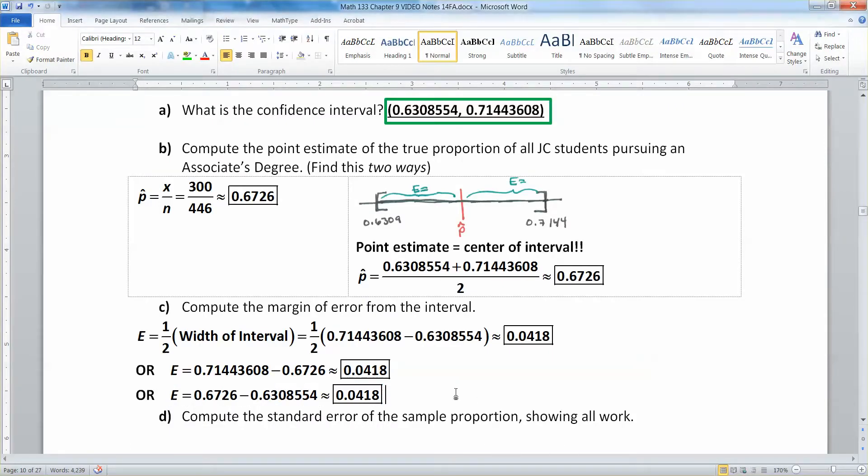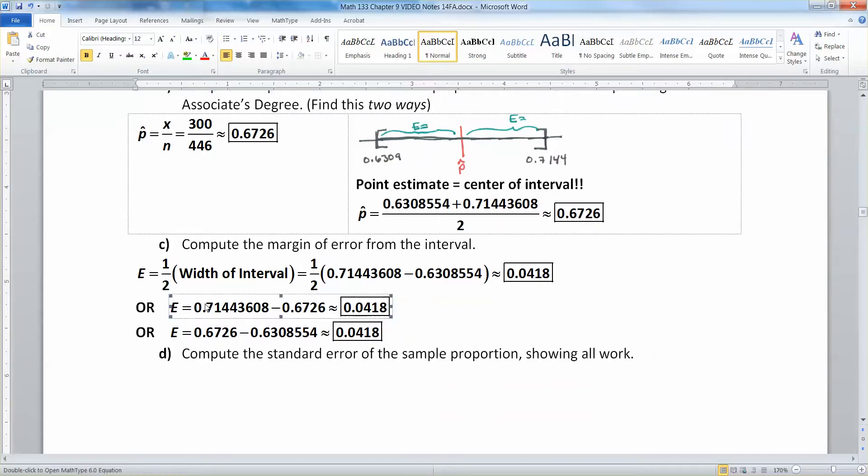This one's the high value, the far right, minus the center, p-hat. Or you could take the center minus the low value. And again, you'll get approximately 0.0418. I don't really care which way you find it. These two down here are a little bit prone to rounding error. Keep in mind that when you're finding the center, you better find a number that's between the low number and the high number. If you end up with, like, 0.79, that is a red flag that you did something wrong, because your number better be Goldilocks. It better be just right, right in the middle.